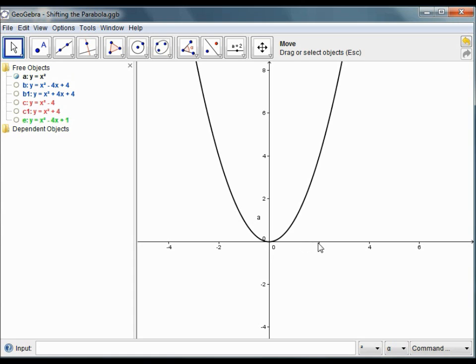If we want to shift the parabola, the vertex actually, to x equals 2, y equals 0, so this same parabola moved over here, then this is the blue parabola which has the equation y equals x squared minus 4x plus 4.